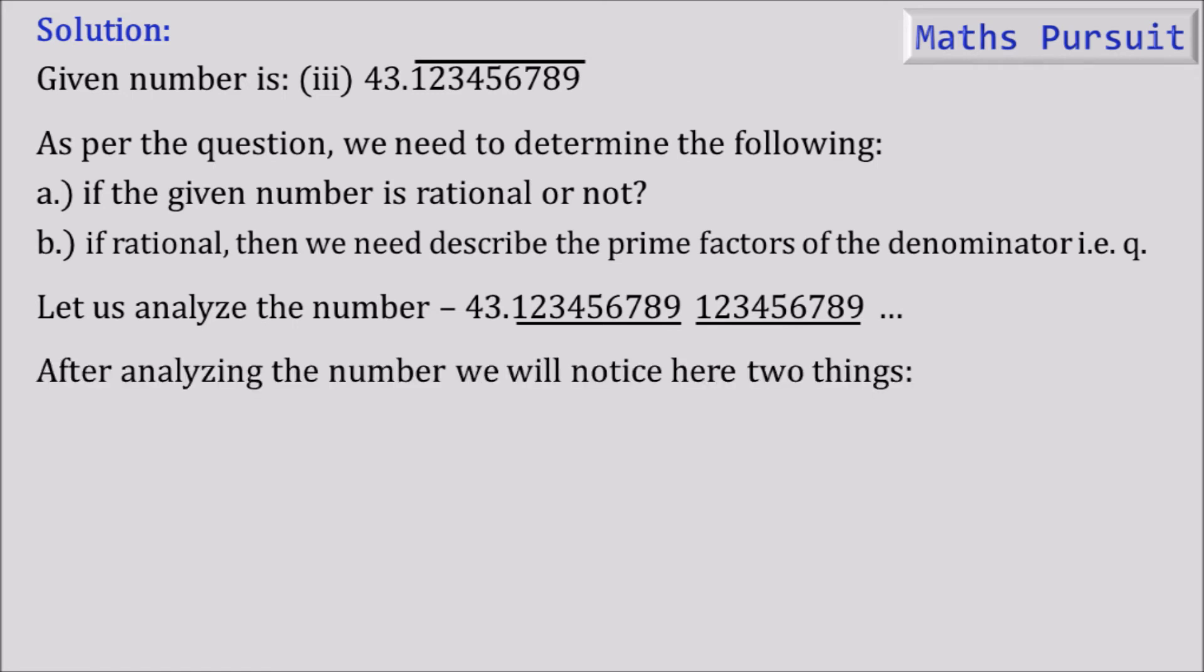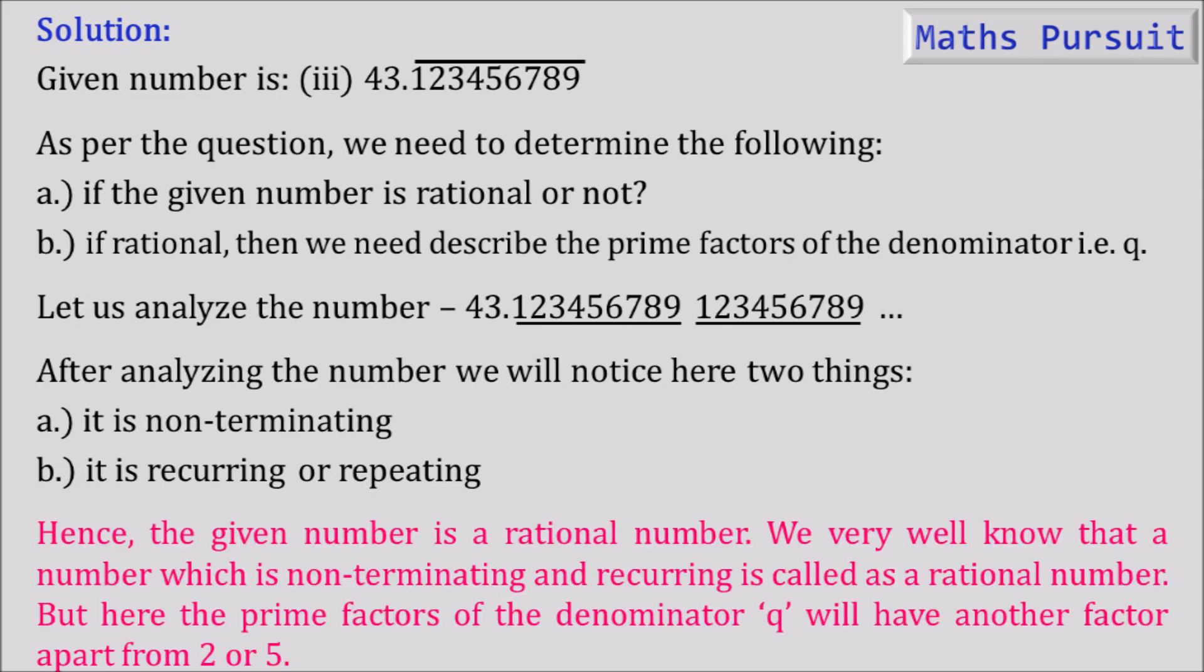After analyzing the number we will notice two things. It is non-terminating because it is repeating as the bar symbol is given. And it is recurring or repeating. That means the numbers are repeating after 123456789. So that means this decimal expansion is non-terminating as well as repeating. Hence, the given number is a rational number. We very well know that a number which is non-terminating and recurring is called a rational number.